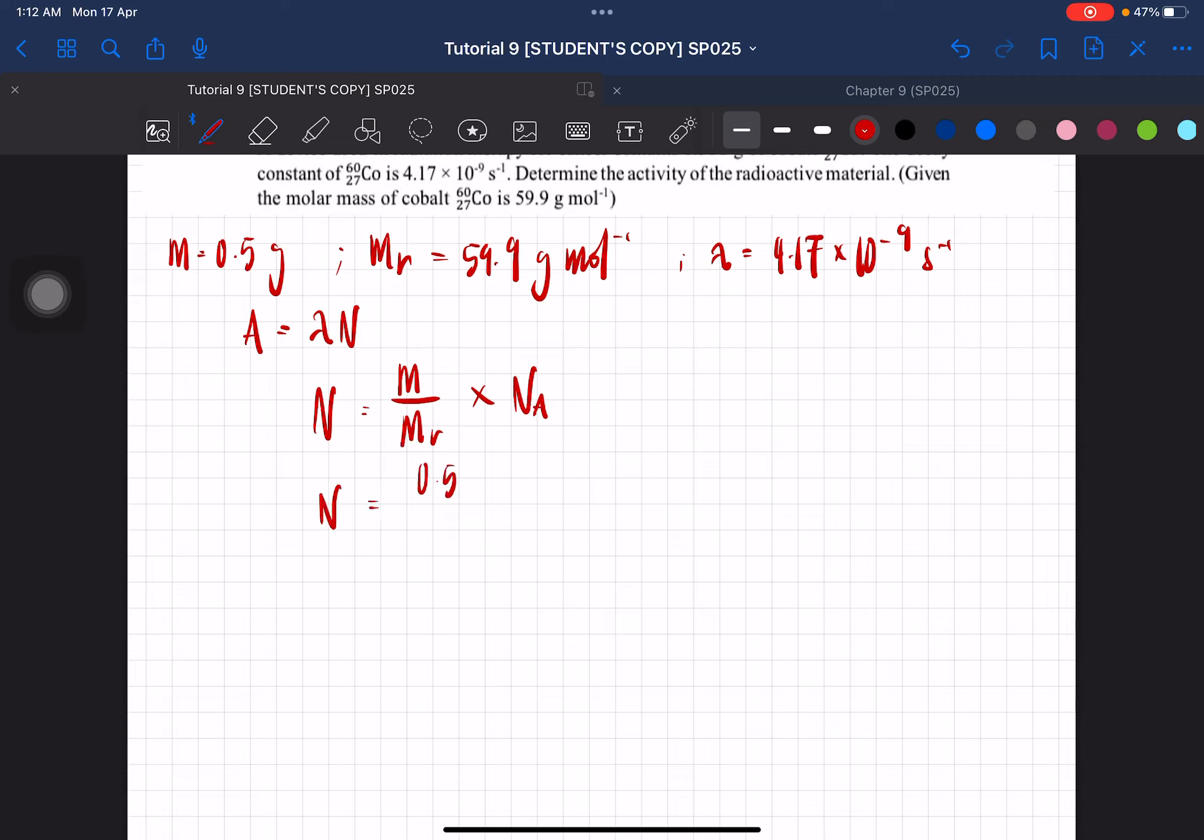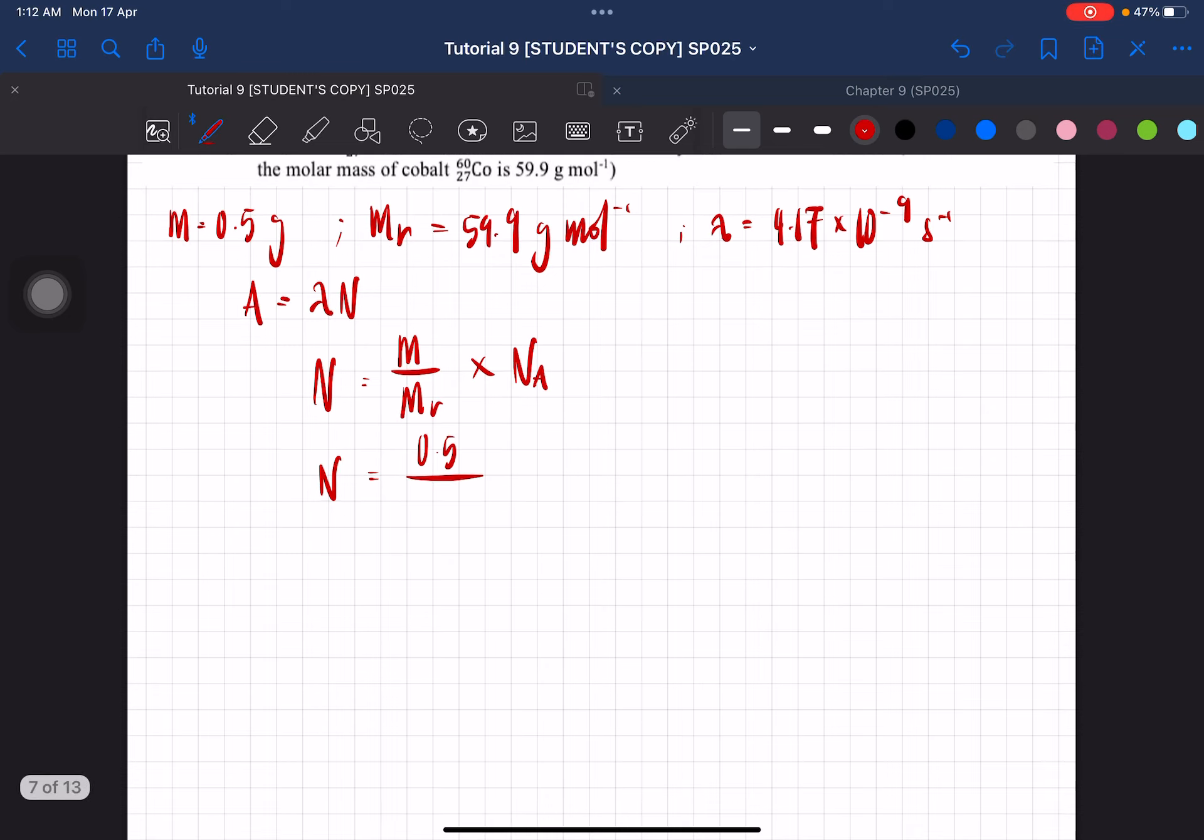This is 0.5. Since they give us the molar mass in grams, we don't need to convert. So, this is 59.9 times with 6.02 times 10 to the power of 23. You will get the number of molecules to be equal to 5.03 times 10 to the power of 21 molecules.